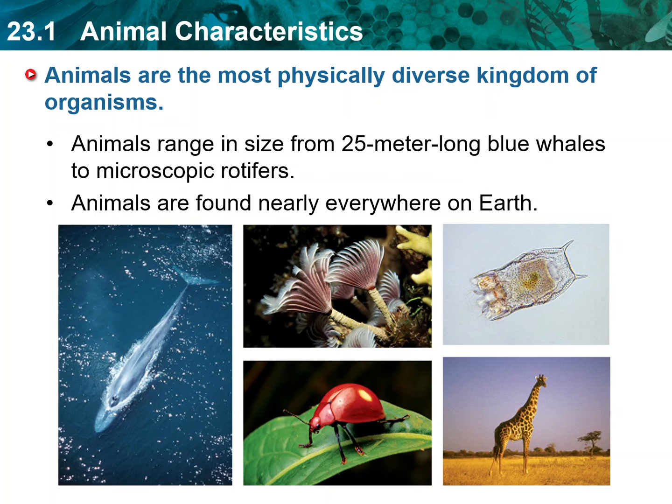Animals are found nearly everywhere on Earth, including places where plants and fungi do not live. They are the dominant herbivores, predators, and detritivores in most ecosystems.